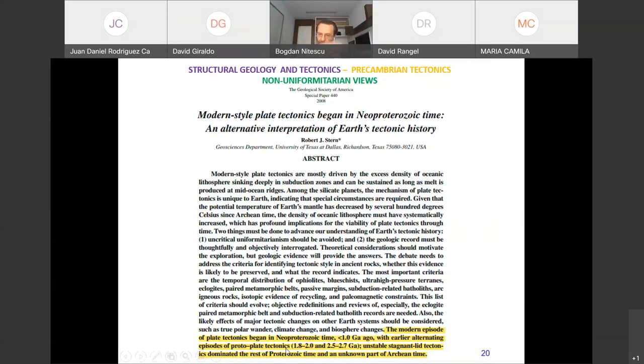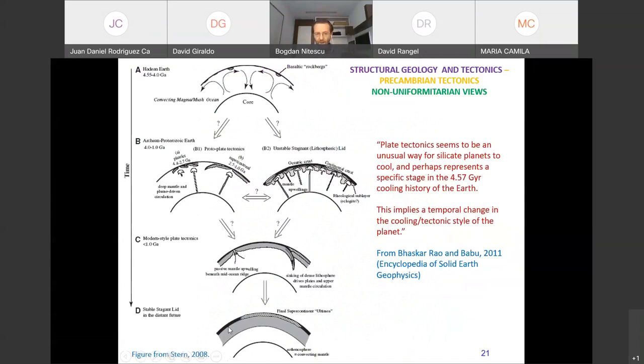Here is another scientist, Robert Stern. He says very clearly, 'Modern-style plate tectonics began in Neoproterozoic time.' He offers an alternative interpretation. He says the modern episode of plate tectonics began at less than 1 billion years ago, with earlier alternating episodes of proto-plate tectonics. Alternating means there was something maybe similar, not that widespread. Again, he tries to say what Warren Hamilton says, and again what Condie says in a certain way. He offers this model of lid tectonics and stagnant lid, with periods where you have a carapace like a lid which is not mobile and periods where you have mobility.